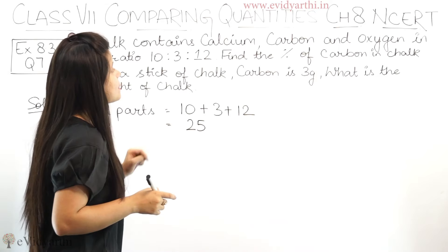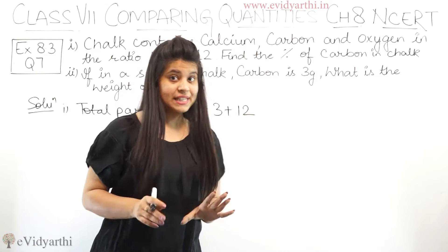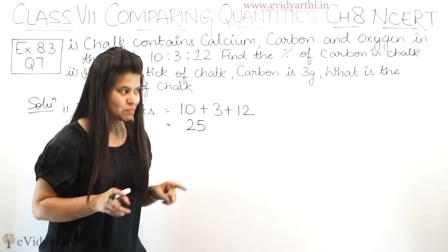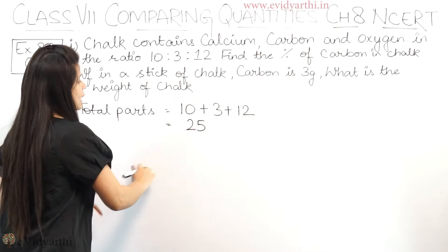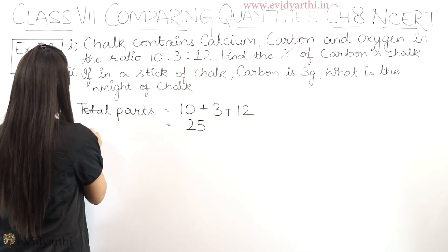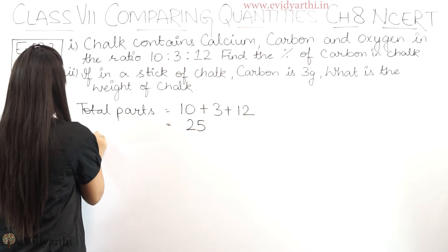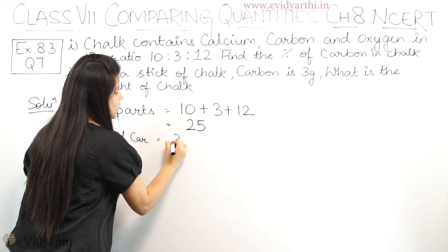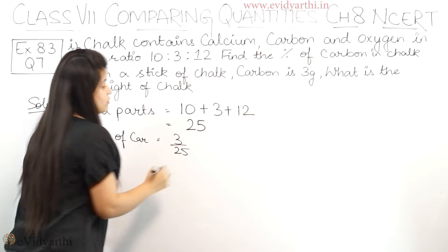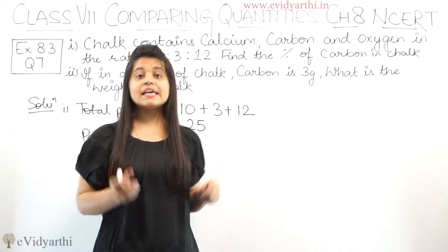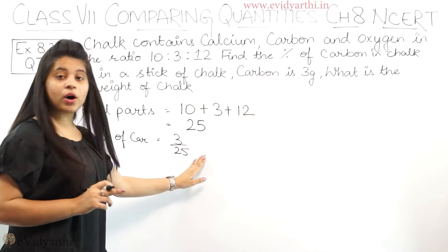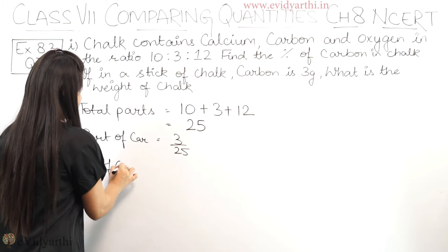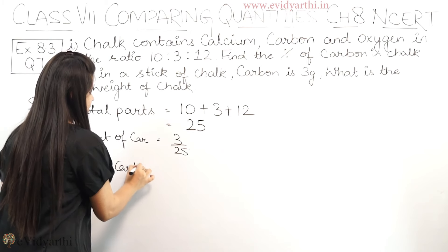Now, next we need to find the percentage of carbon. अब percentage निकालना है, तो हमें fraction चाहिए. The part of carbon is 3 upon 25 — meaning out of a total of 25, carbon is 3. So the fraction is 3/25.